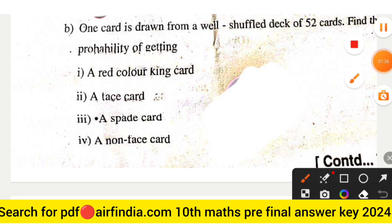Optional question (b): One card is drawn from a well shuffled deck of 52 cards. Find the probability of getting: (i) a red color king card, (ii) a face card, (iii) a spade card, and (iv) a non-face card.